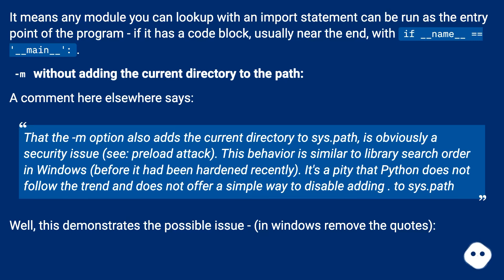A comment notes that the `-m` option also adds the current directory to `sys.path`, which is a security issue — a preload attack. This behavior is similar to library search order in Windows before it was hardened. It's a pity that Python does not follow the trend and does not offer a simple way to disable adding to `sys.path`. This demonstrates the possible issue in Windows.